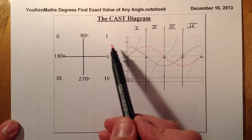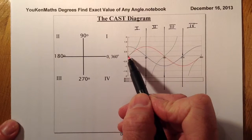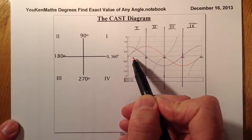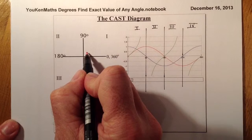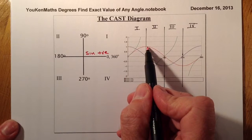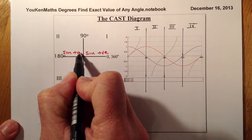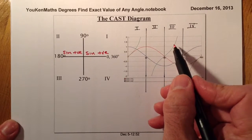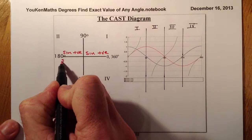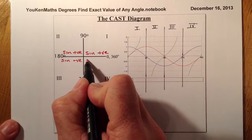Looking at the sine graph: in the first quadrant, the sine graph is positive — it's above the x-axis. In the second quadrant, the sine graph is still above, so sine is still positive. When we get to the third quadrant, the sine graph goes underneath the x-axis, so sine is negative. And in the fourth quadrant, the sine graph is also negative.